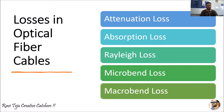Hello everyone, welcome to the course of Microwave and Optical Communications. In today's class we are going to learn about losses in optical fiber cables. There are different types of losses that occur in optical fiber cables: the first is attenuation loss, second is absorption loss, third is Rayleigh loss, fourth is micro bend, and the fifth is macro bend. We are going to see an overview of all these losses one by one.